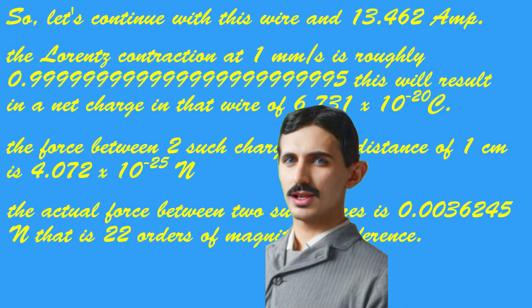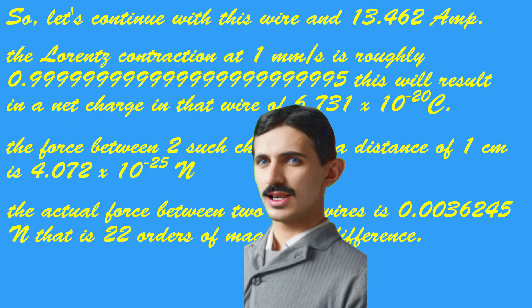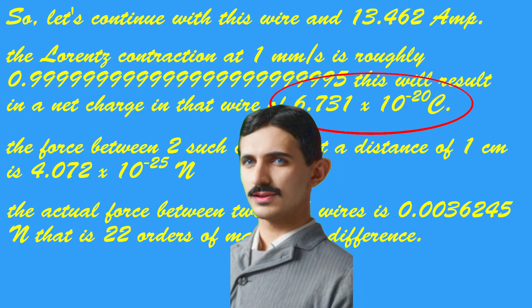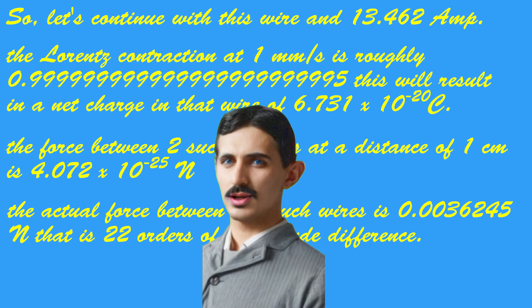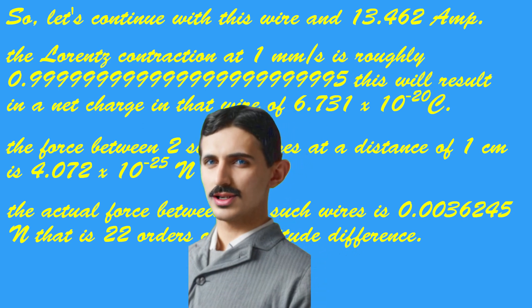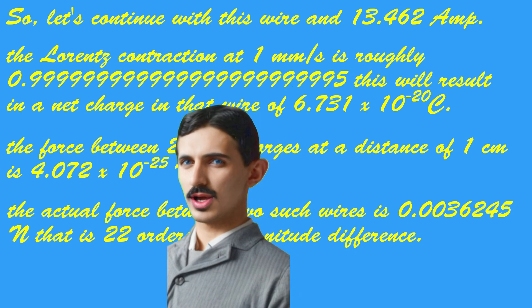Using the Lorentz transformation, we can see that this would result in an apparent net charge of, well, that number that you see there. With that, we can calculate the force between two such wires and see that we are 22 orders of magnitude off.